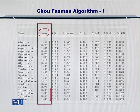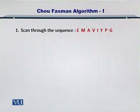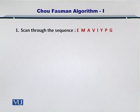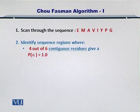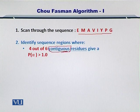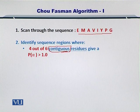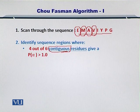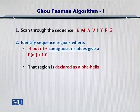I'll talk about the propensity for formation of an alpha helix in the next slide. First, you take the amino acid sequence for which the structure is unknown and you want to predict its structure. Next, you identify the amino acid regions within this sequence for which 4 out of 6 contiguous — that is, neighboring — residues give you a propensity for formation of an alpha helix more than 1.0. You compute the propensity for each amino acid, multiply them together, and if the value is greater than 1, that region is declared as an alpha helix.